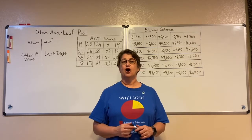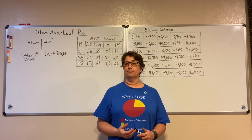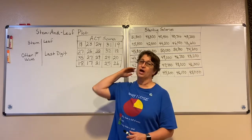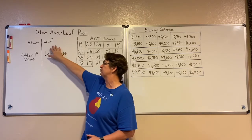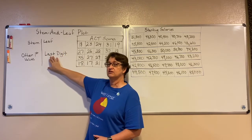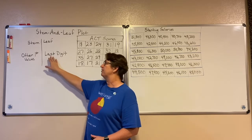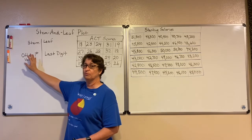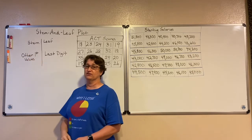A stem and leaf plot always shows quantitative data. In a stem and leaf plot, the leaf position always holds the last important digit of the data set. Then the other values — whatever's left over — will be the stem.